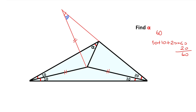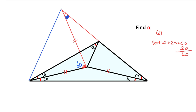Therefore, this angle has now become 60 degrees. Next, if we connect these two corners, we get an equilateral triangle. We know that every isosceles triangle with a vertex angle of 60 degrees is an equilateral triangle.